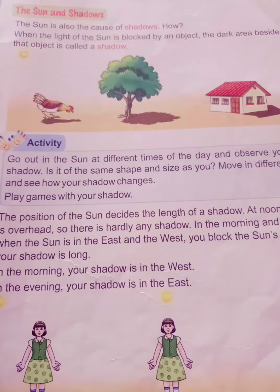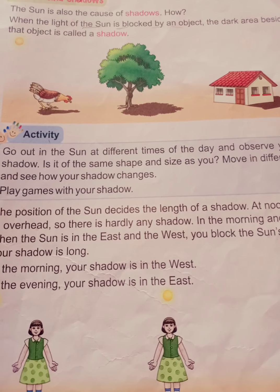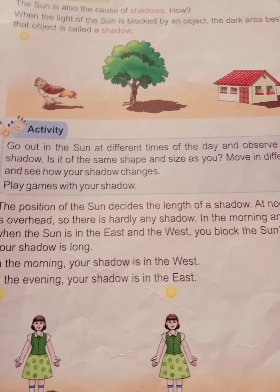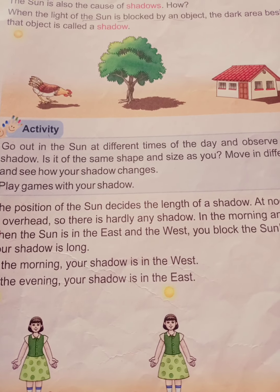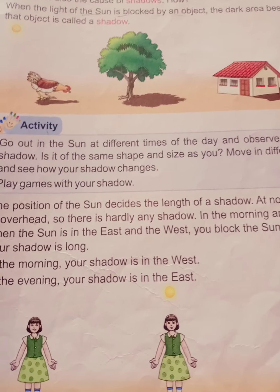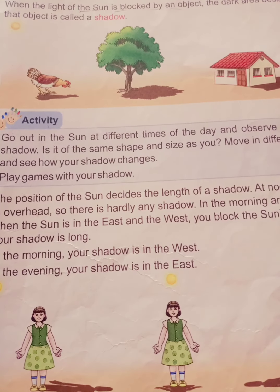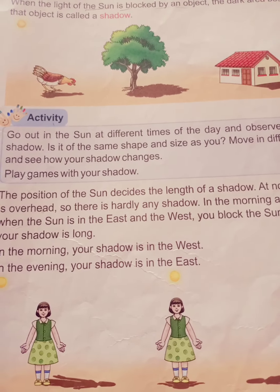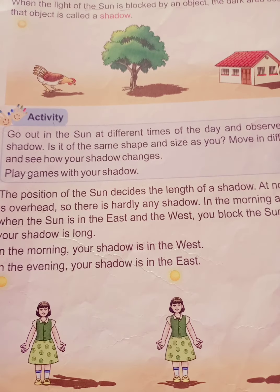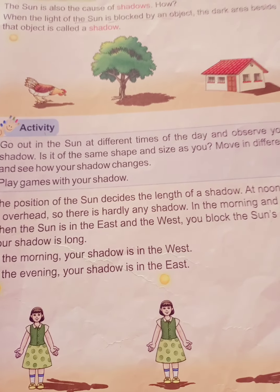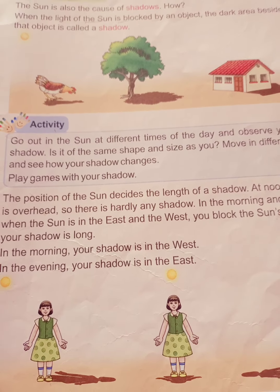Hi, good morning children. Welcome to EVA session. Open page number 169. Already we learned about the sun planet — the sun gives us heat and light, and the sun is round in shape.